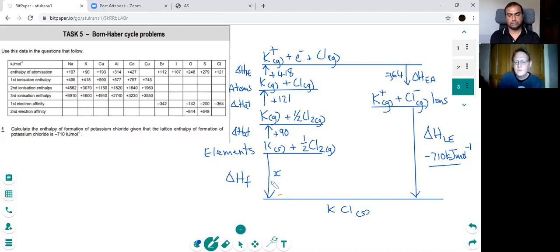And then to work out the enthalpy of formation, if we notice the enthalpy of formation arrow is going anti-clockwise, all the other arrows are going clockwise. So we can say that the enthalpy of formation is equal to all the other enthalpy changes, which in this case would be 90 plus 121 plus 418 plus minus 364 and then minus 710 kilojoules per mole. And then just putting those into the calculator would give us the enthalpy of formation of potassium chloride.